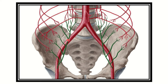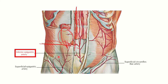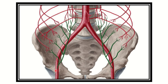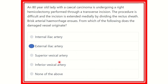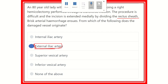The inferior epigastric artery arises from this artery here — the external iliac artery. So the brisk hemorrhage develops from the inferior epigastric artery, and the inferior epigastric artery is a branch of the external iliac artery. Therefore, our final answer is the external iliac artery. The external iliac artery originates from the common iliac artery and gives a branch — the inferior epigastric artery — to the rectus abdominis muscle.